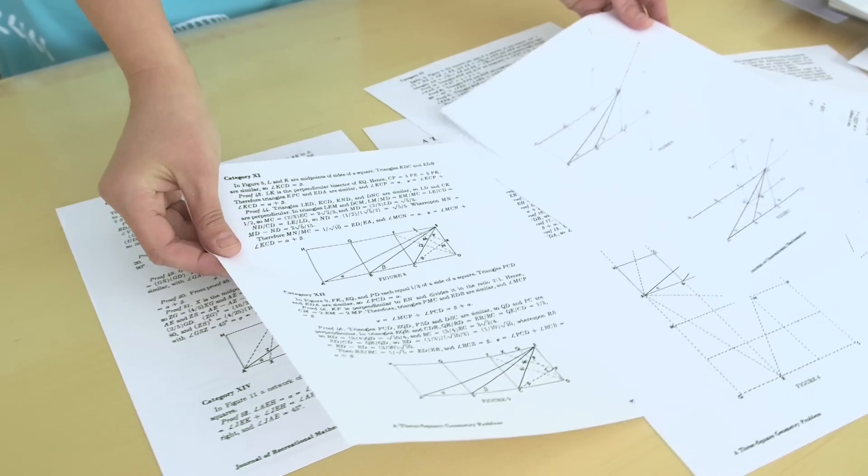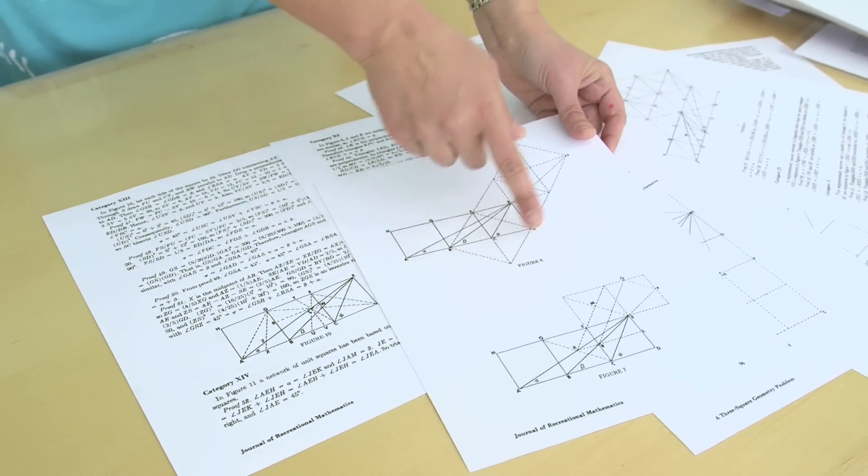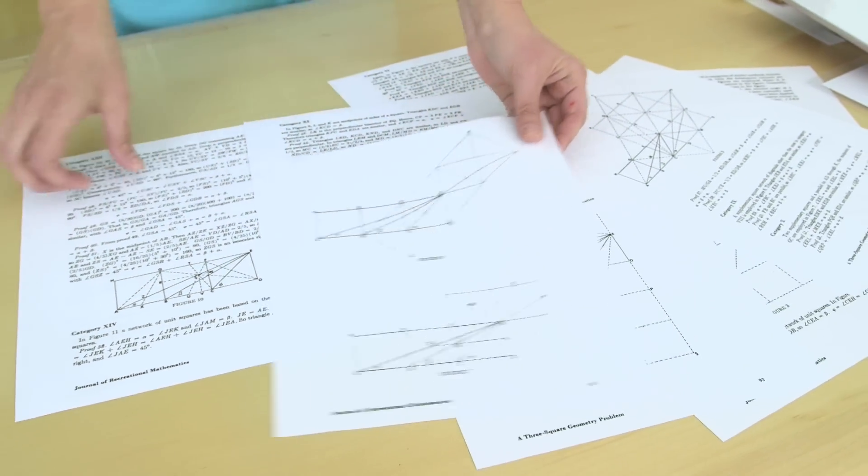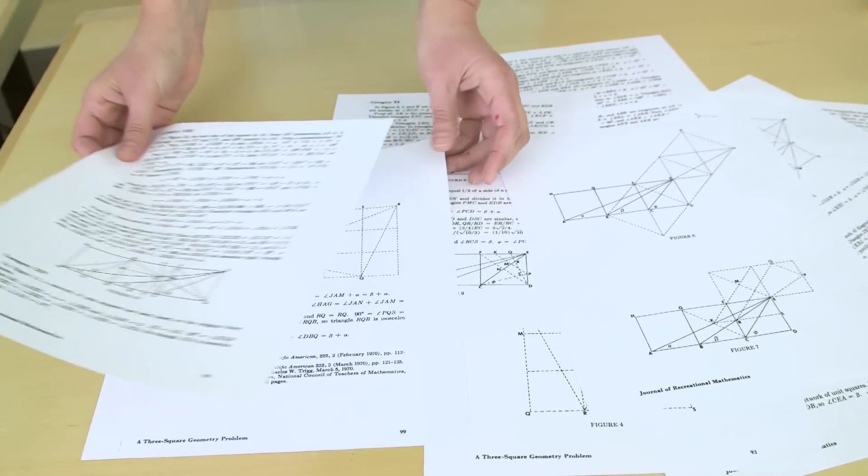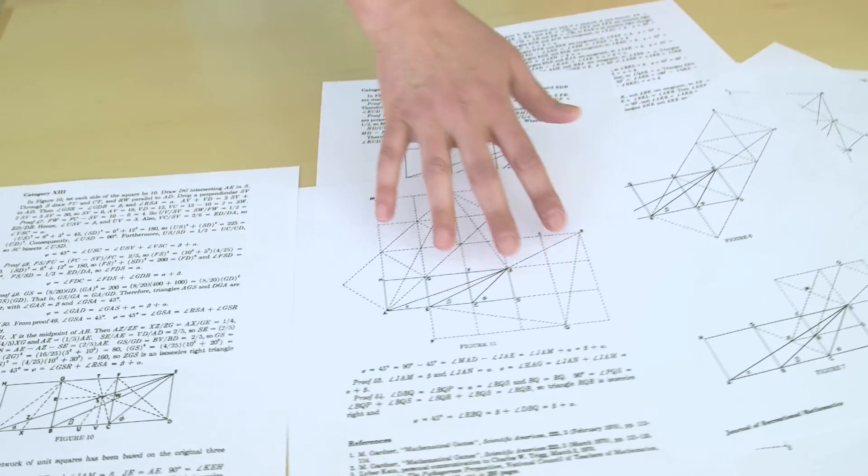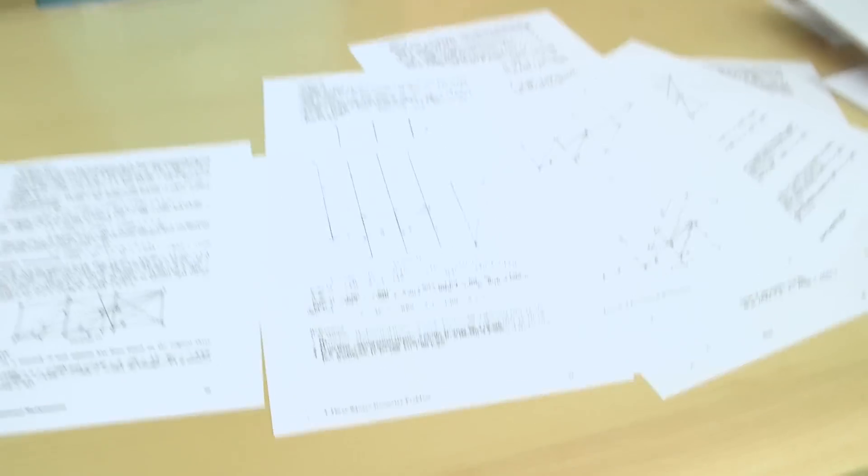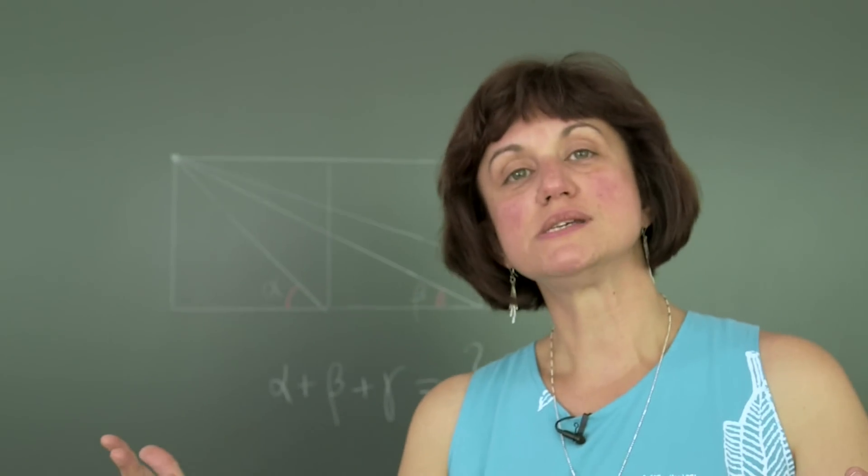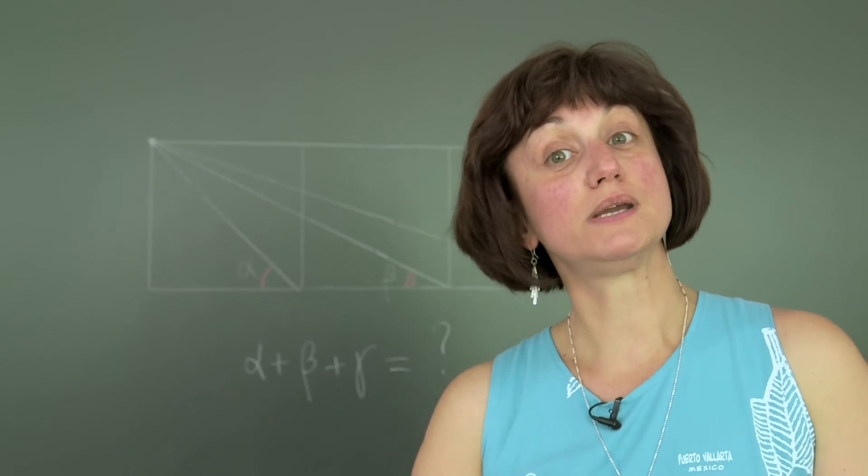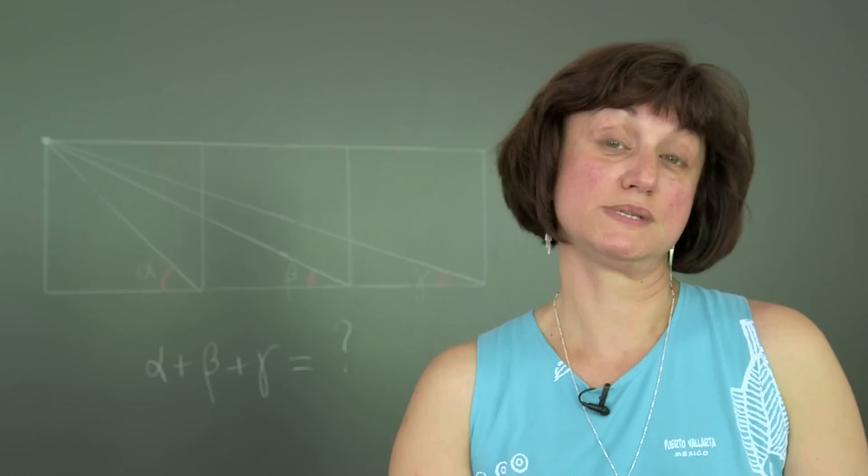In most of the solutions that you see here, there are some extra things that did not belong to the original problem. And that is indeed a brilliant approach which mathematicians take to solve problems. They complete it to what's missing there. And then the problem becomes easier or perhaps even trivial.